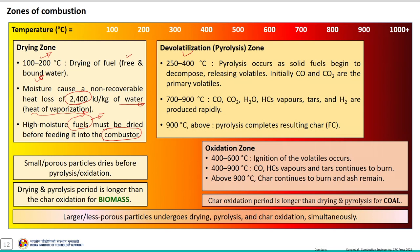The devolatilization zone — also termed the pyrolysis zone — occurs across three temperature ranges. First, pyrolysis occurs at 250 to 400 degrees Celsius as solid fuels begin to decompose releasing volatiles. During this initial stage, carbon monoxide and carbon dioxide are the primary volatiles released. This is followed by rapid production of carbon monoxide, carbon dioxide, hydrocarbon vapors, tar, and hydrogen at 700 to 900 degrees Celsius. Above 900 degrees Celsius, pyrolysis completes, resulting in char as a product.